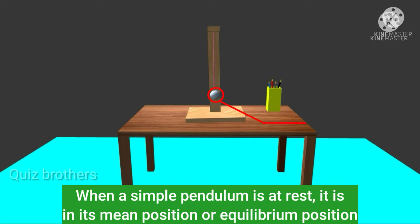When a simple pendulum is at rest, it is in its mean position or equilibrium position.